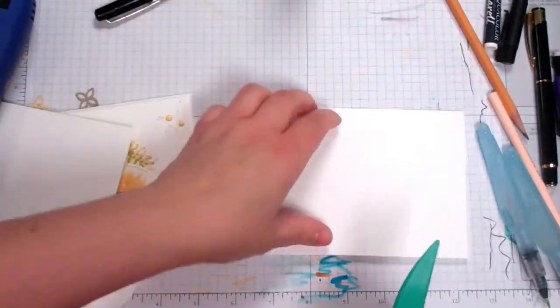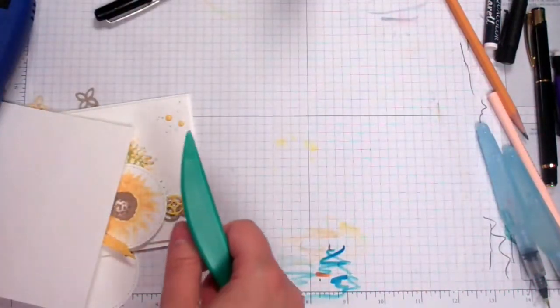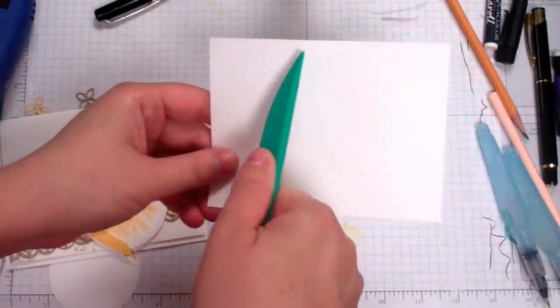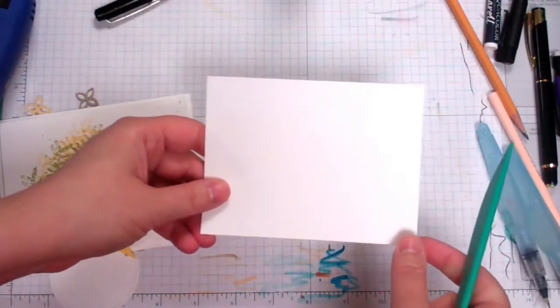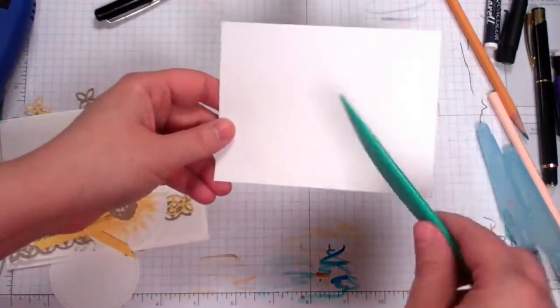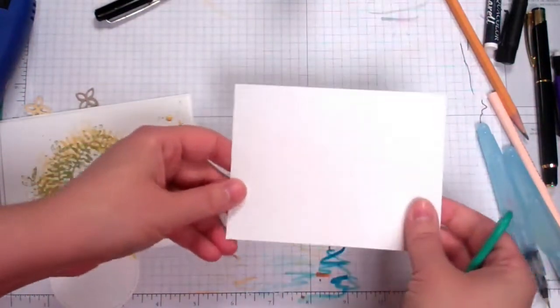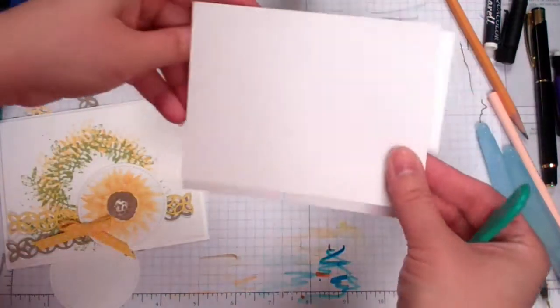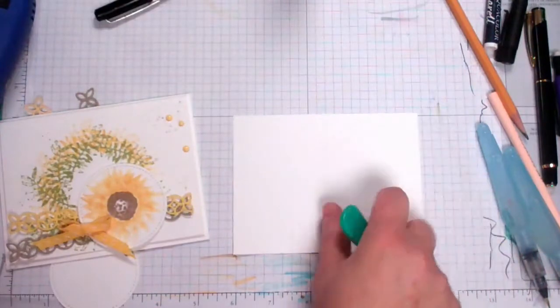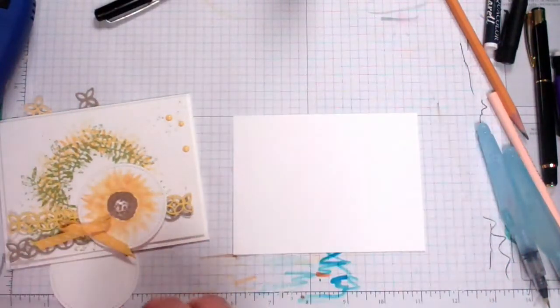Then we have a piece of 5 and a quarter by 4. I can't say my measurements right today. That's just going to layer right on top there, just like that. So we're going to go ahead and do some stamping on that.